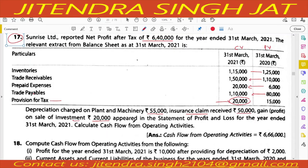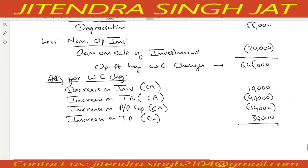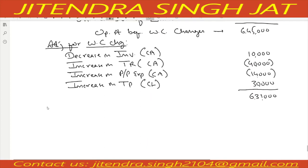Trade payables increased by 15,000 — increase in current liability means inflow of cash, so 15,000 is added. All points are over. Total: 6,45,000 plus 10,000 plus 15,000 minus 40,000 minus 14,000 equals 6,16,000... let me recalculate: 6,45,000 plus 40,000 minus 54,000 equals 6,31,000.